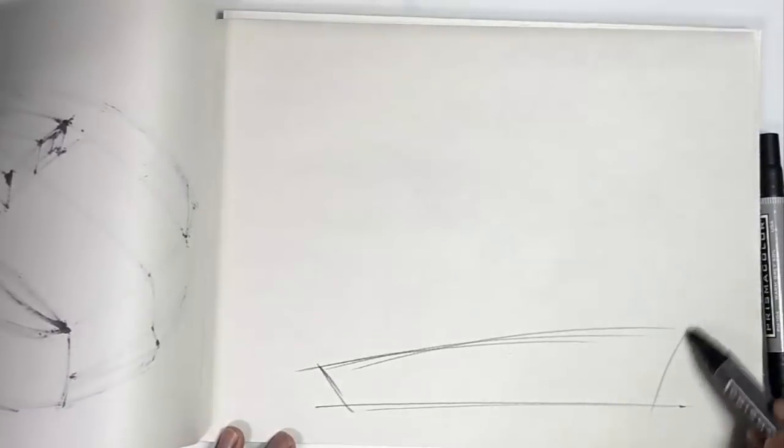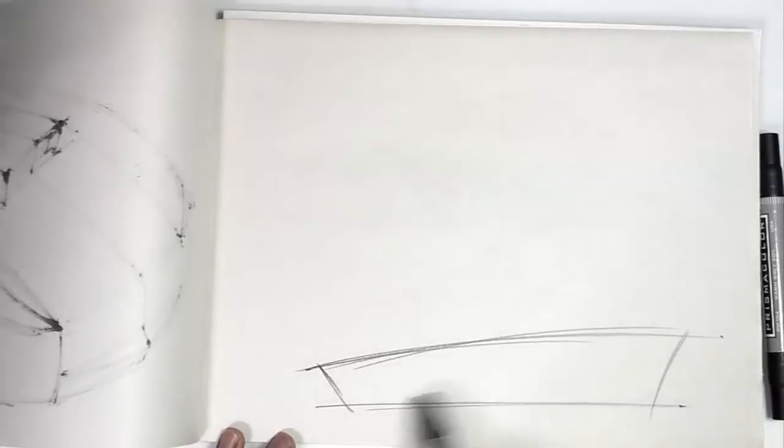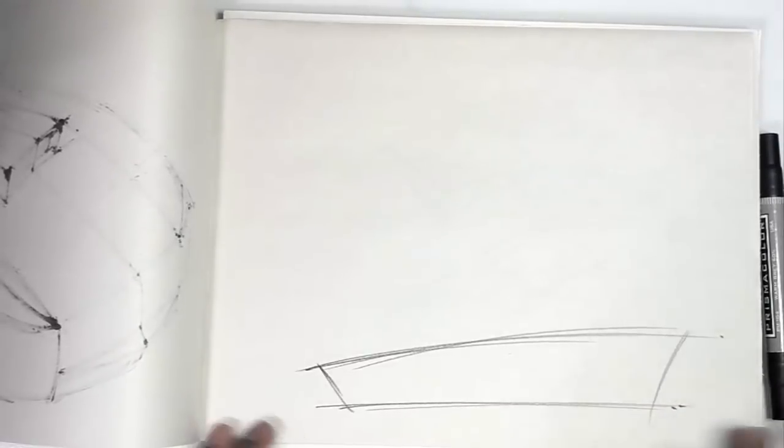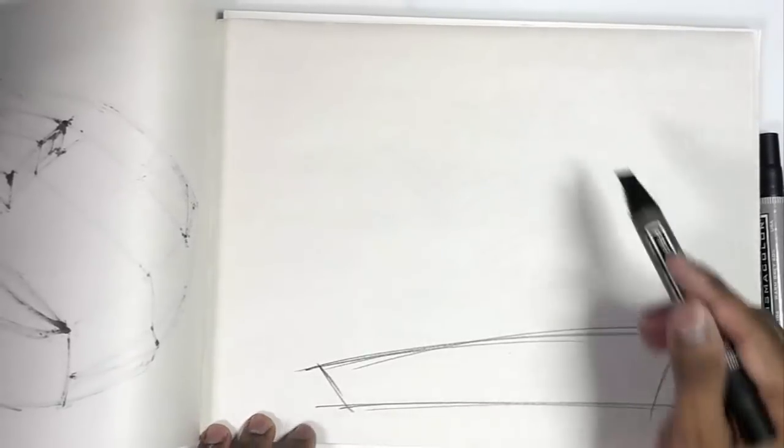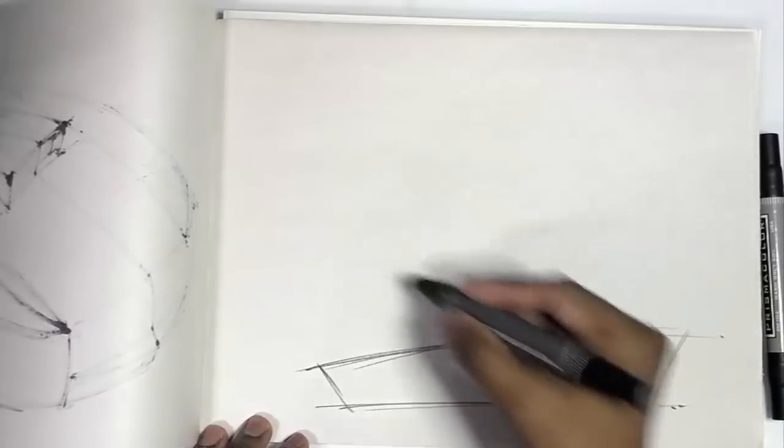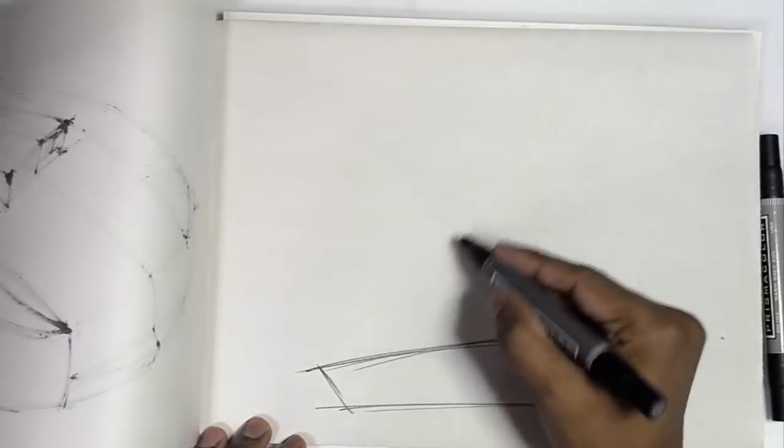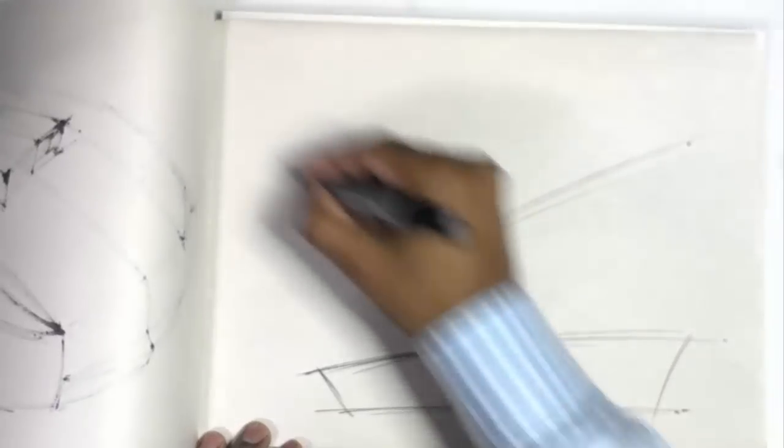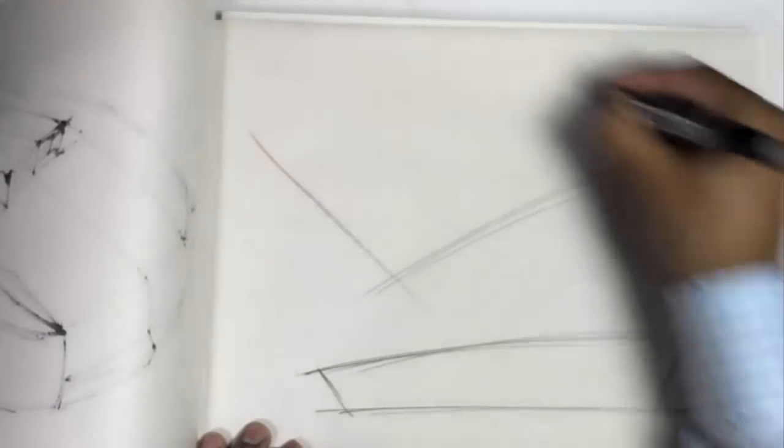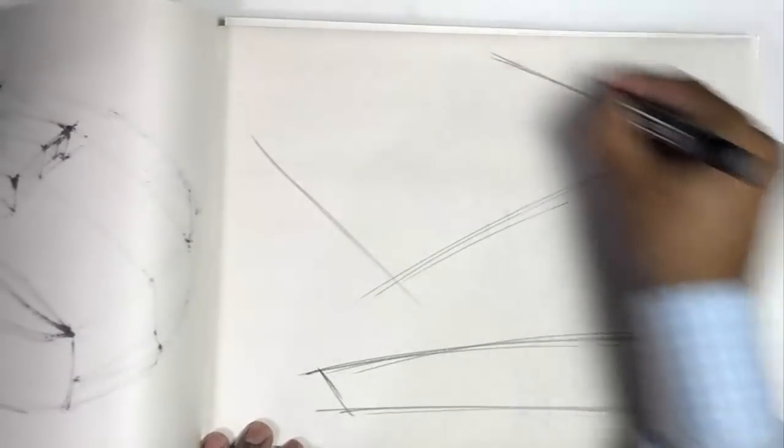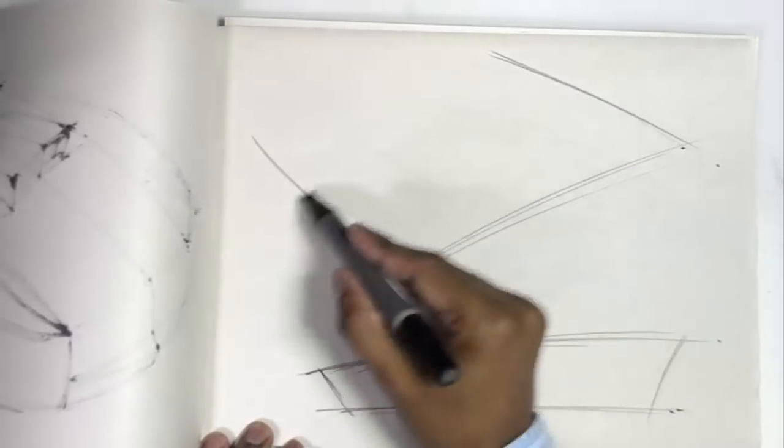We want to put that in perspective. It's got a little bit of a crown. Once again, just a basic shape. We're going to take this into perspective. I've got my guidelines going into perspective.